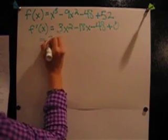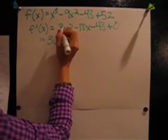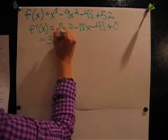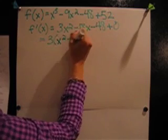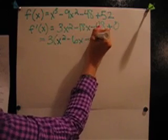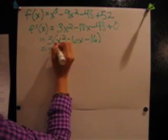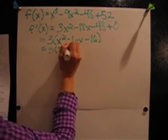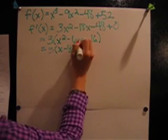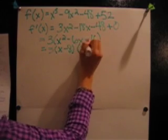Through factorization, we will do that is equal to 3 parentheses x squared minus 6x minus 16. We can further simplify that into 3 parentheses x minus 8, close parentheses, parentheses x plus 2.